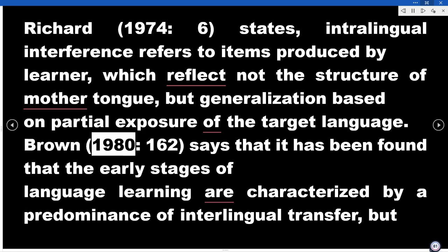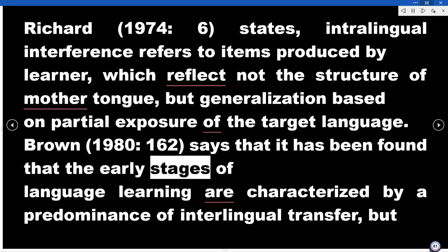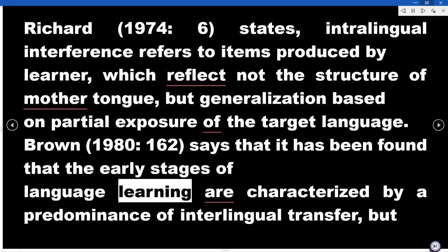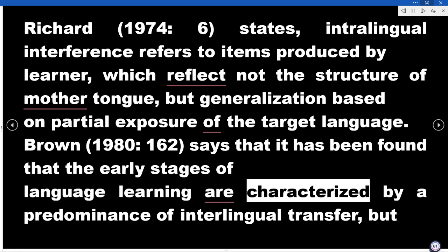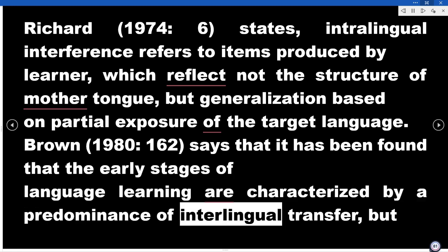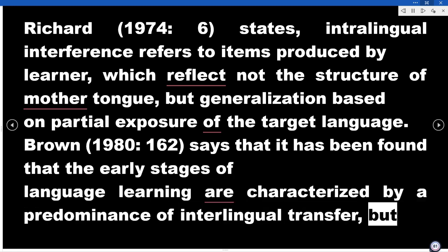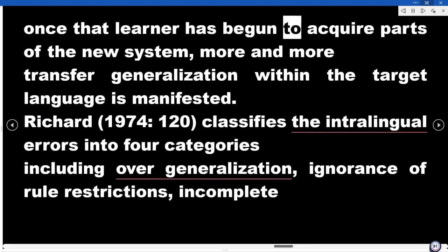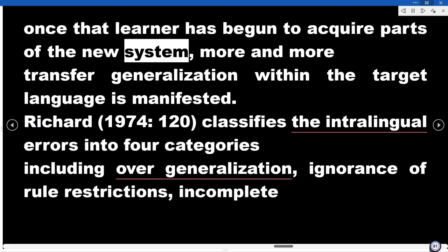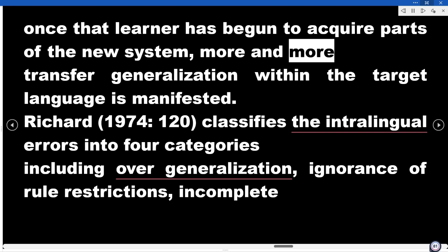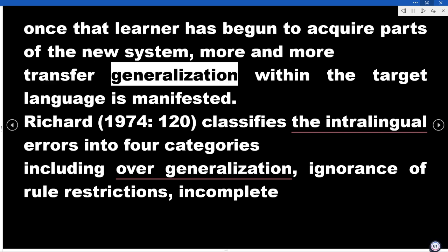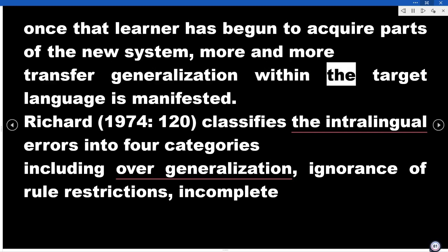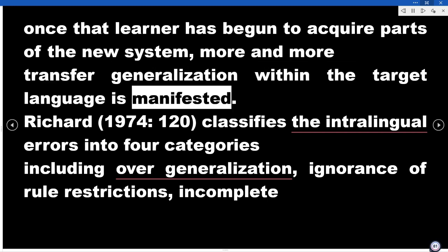Brown (1980, p. 162) says that it has been found that the early stages of language learning are characterized by a predominance of interlingual transfer, but once the learner has begun to acquire parts of the new system, more and more transfer generalization within the target language is manifested.